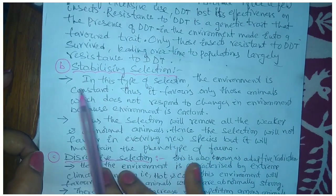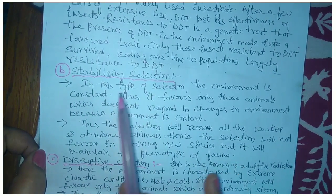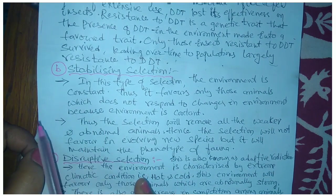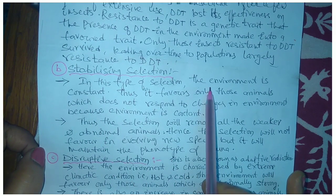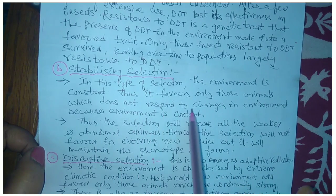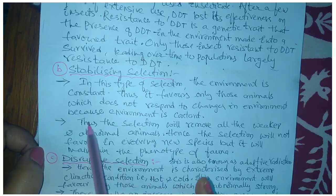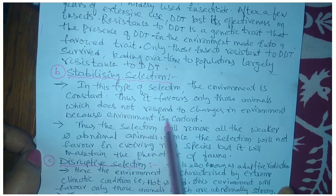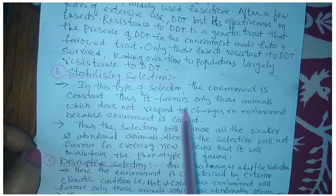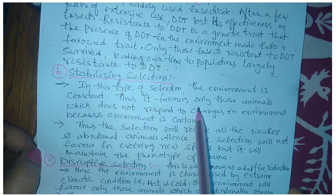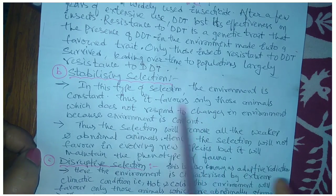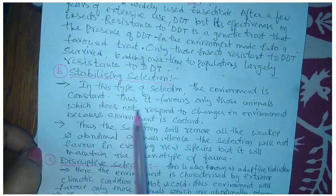The next one is stabilizing selection. In this type of selection, the environment is constant — there is no change in the environment. Thus it favors only those animals which do not respond to change in the environment. This type of environment is suitable for those animals that cannot survive in a changed environment, and such animals are supported by stabilizing selection.